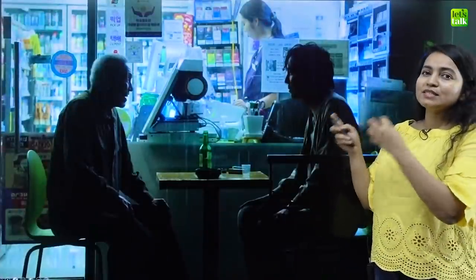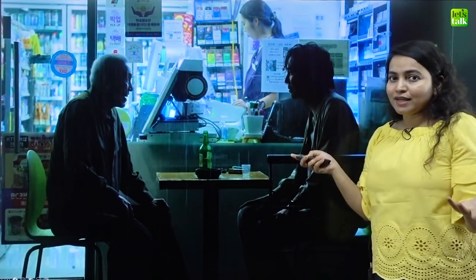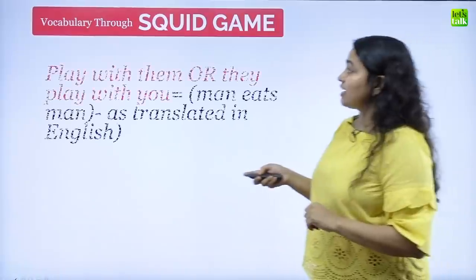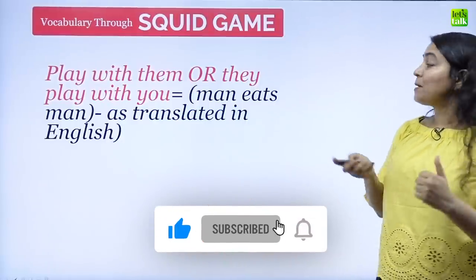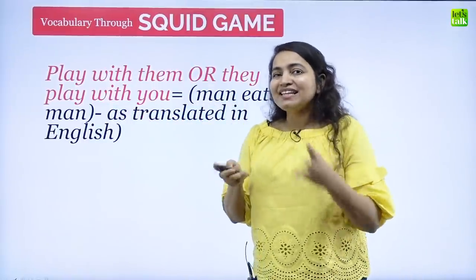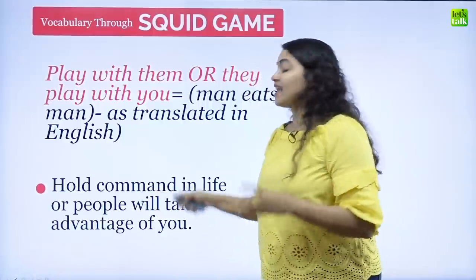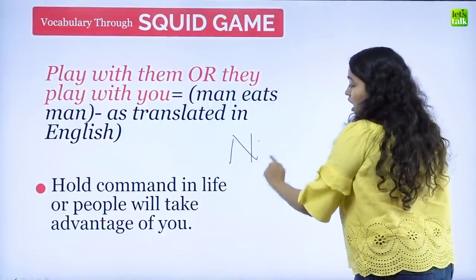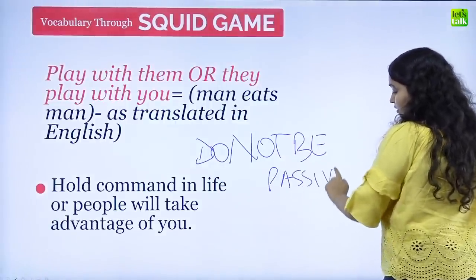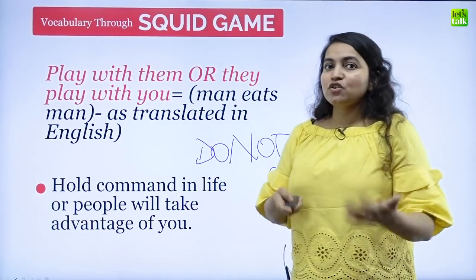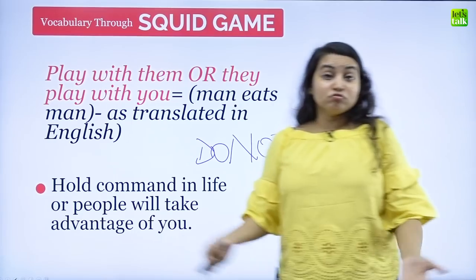In a nice scene, an old man — one of the most famous characters — gives advice on how to play the game. He says: 'Play with them, or they will play with you.' This was a Korean idiom but in English it translates as 'man eats man,' which means you should hold command in life or people will take advantage of you. Do not be passive — in life you've got to take action. If you're not action-oriented, people will take advantage of you, because man eats man in the ruthless game of life.